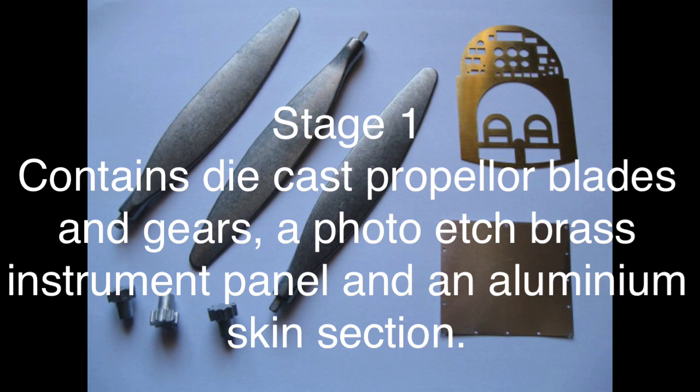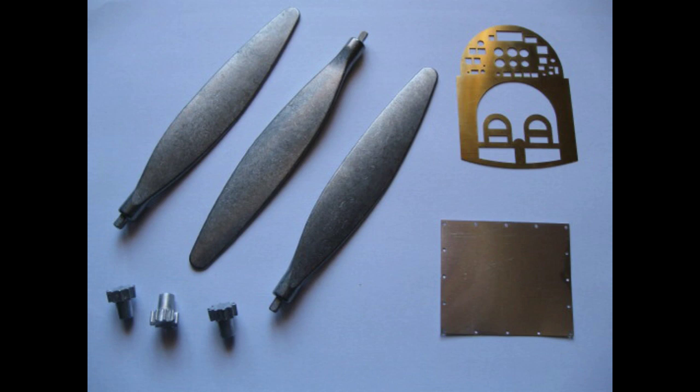Welcome to stage 1 of Build A Spitfire. This issue contains die-cast propeller blades, gears, photo-etched brass instrument panel, and an aluminum skin section.